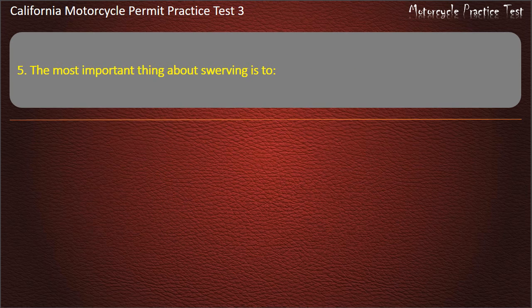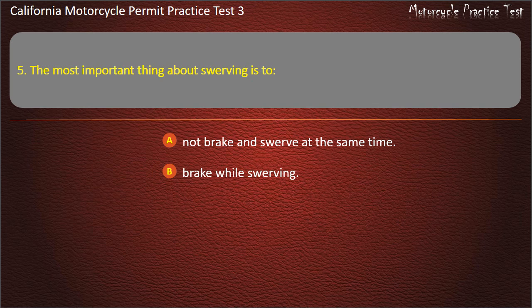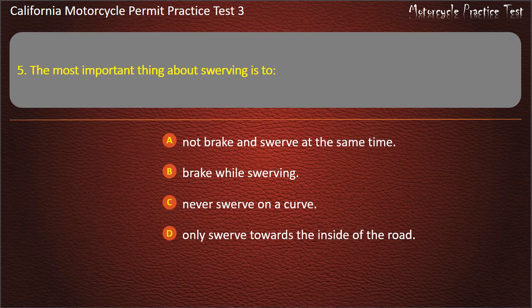Question 5. The most important thing about swerving is to: not brake and swerve at the same time, not brake while swerving, never swerve on a curve, or only swerve towards the inside of the road. Answer: Not brake and swerve at the same time.